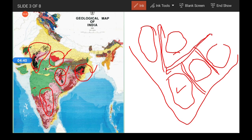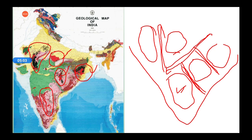Cratons are the stable portions of a continent, and the boundaries between these Cratons are the mobile belts. Because earlier these Cratons were not together — they were separate. When they came closer, at the boundaries there would be certain deformations: folding, faulting, and rifting. That is why the boundaries form the mobile belts, while the remaining stable part is known as the Craton. These are the five basic building blocks — the oldest rock units of the Indian subcontinent.